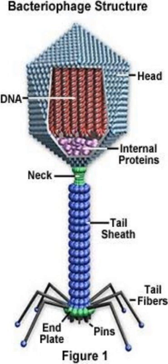The bacteriophage has a complex symmetry. It exhibits a combination of icosahedral and helical symmetry. The head is icosahedral in symmetry and the tail is helical in symmetry. The bacteriophage has 2,144 capsomeres, of which 2,000 capsomeres are present in the head, arranged in an icosahedral form having 20 triangular sides called facets and 12 corners called vertices.